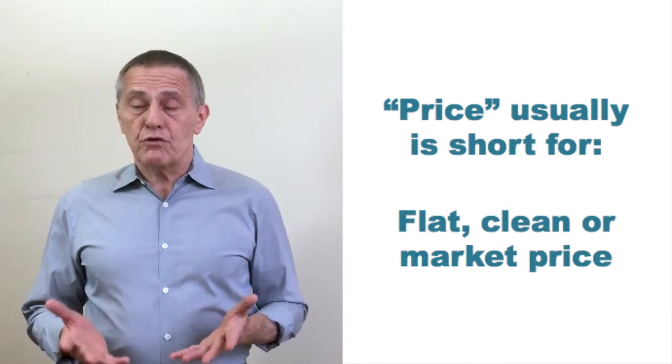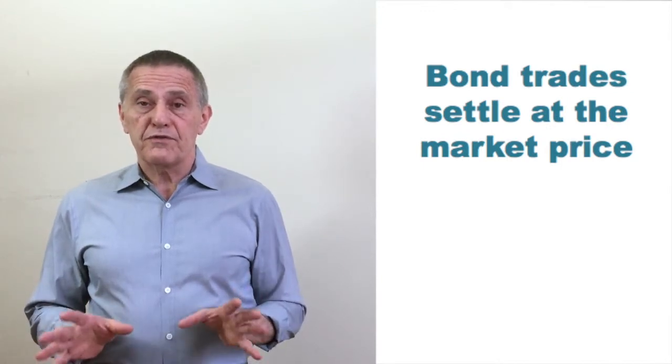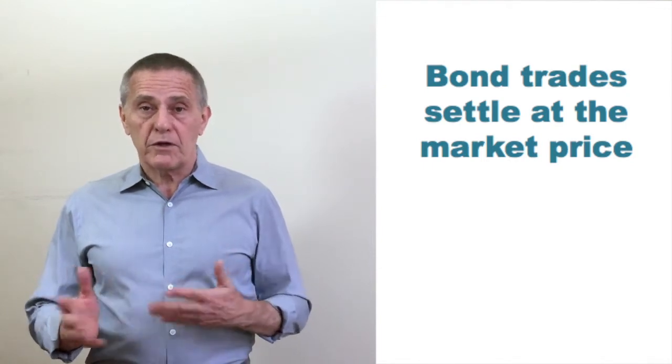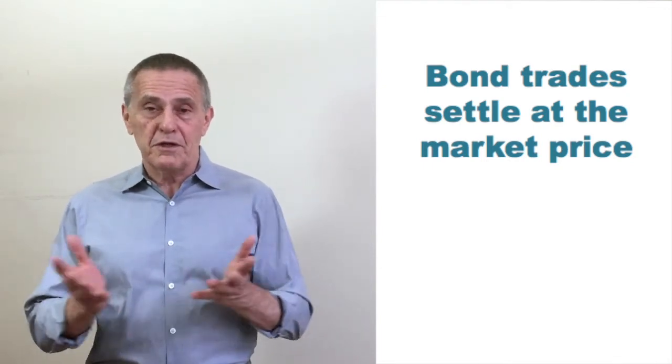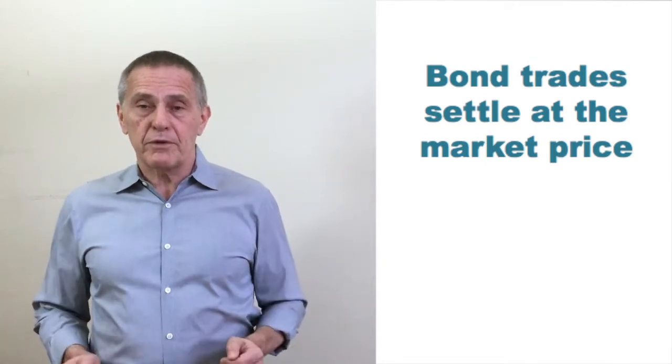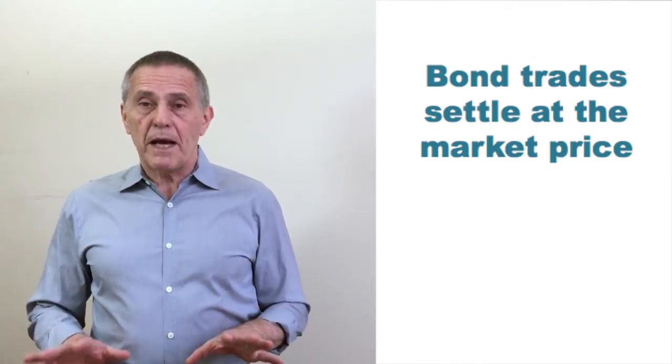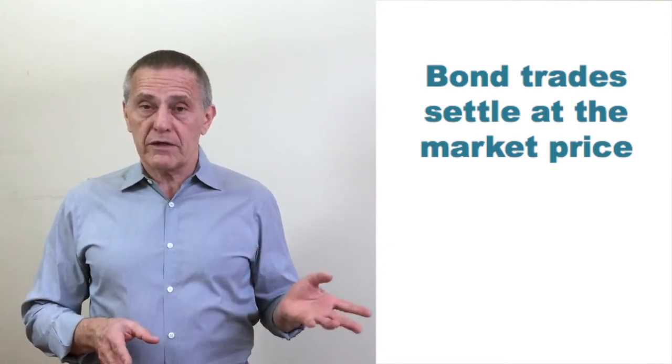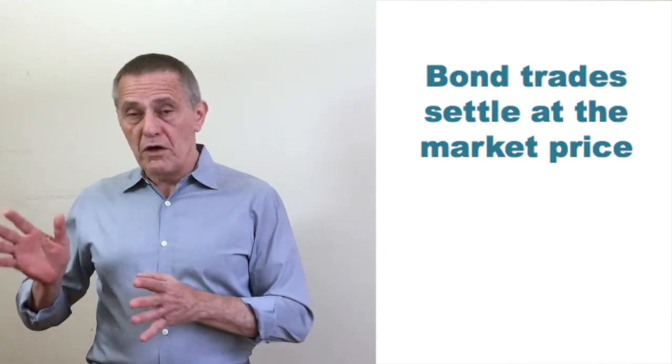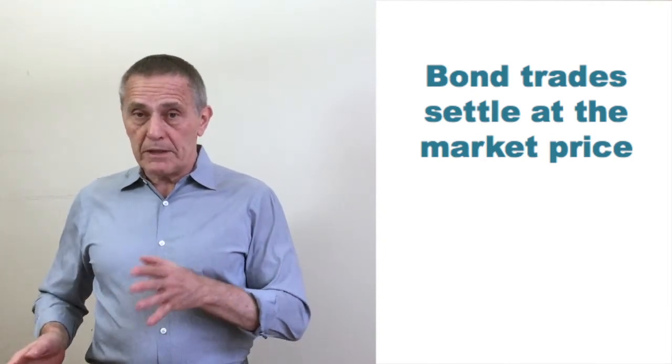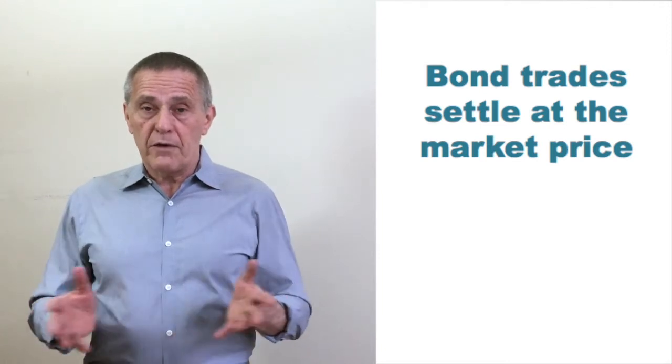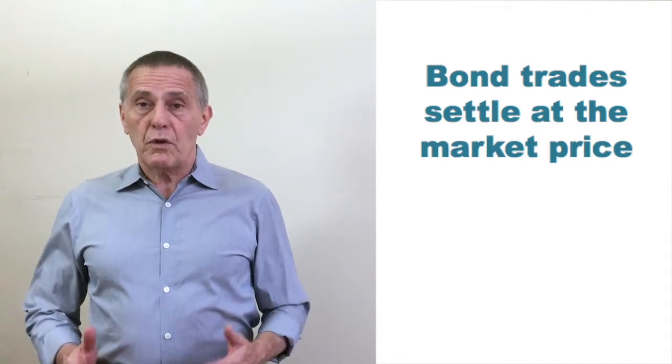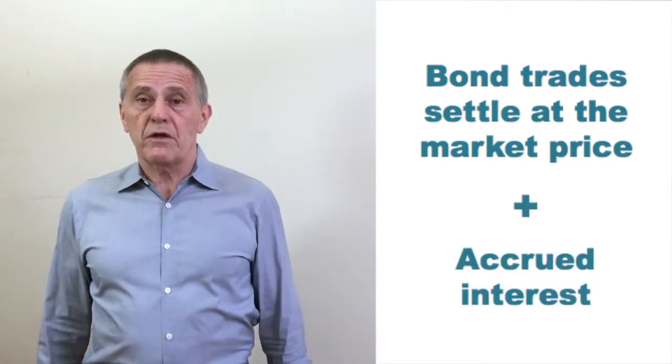And yet bond trades settle at their full value. Thus for any coupon bond, in addition to the price the buyer and seller have negotiated or the bid or ask at which the investor has traded a bond with a dealer, the normal convention is to calculate the dollar amount of accrued interest on the next due coupon, that is the interest that's been earned starting on the last coupon payment date and running up until the settlement date of the trade, the date beneficial ownership of the bond changes hands. That accrued interest will automatically be added on to whatever price the buyer and seller have agreed to.